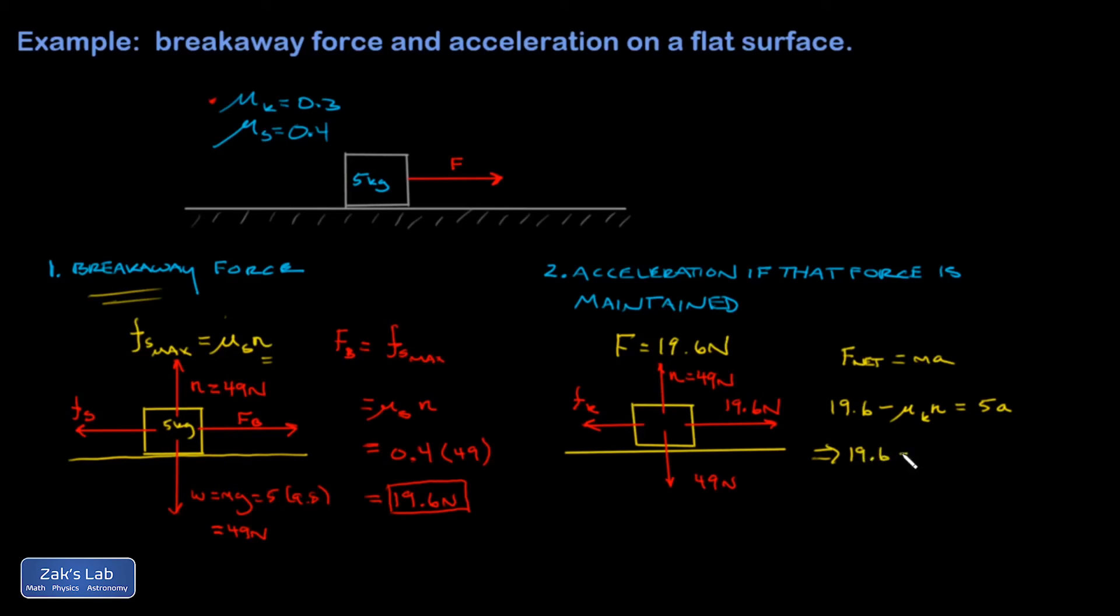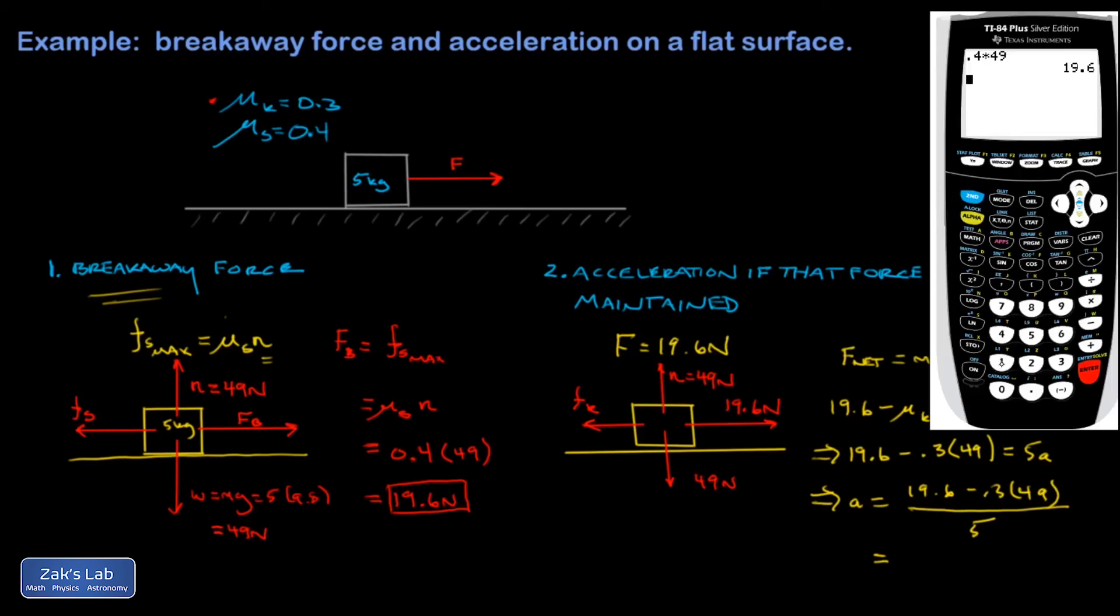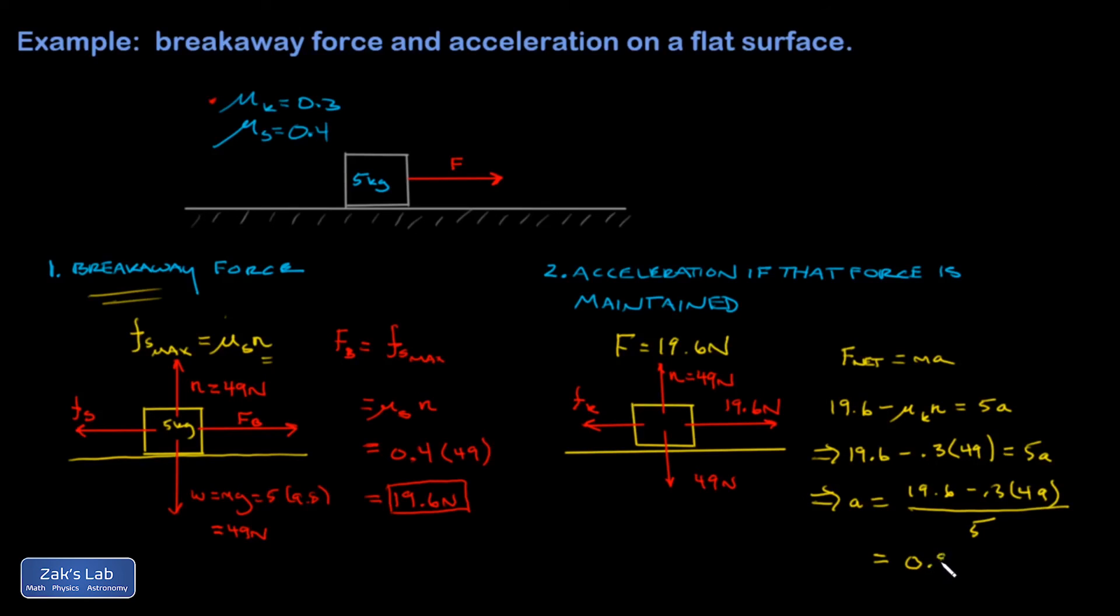Let's put in the rest of our numbers. I have 19.6 minus 0.3 times 49 equals 5a. I guess I'll just solve it for a, and then we'll go to the calculator. So a is 19.6 minus 0.3 times 49, all divided by 5. So we'll get our calculator. I have 19.6 minus 0.3 times 49. Let's go ahead and consolidate those by pressing enter. Divide the result by 5. And we'll get an acceleration of 0.98 meters per second squared.